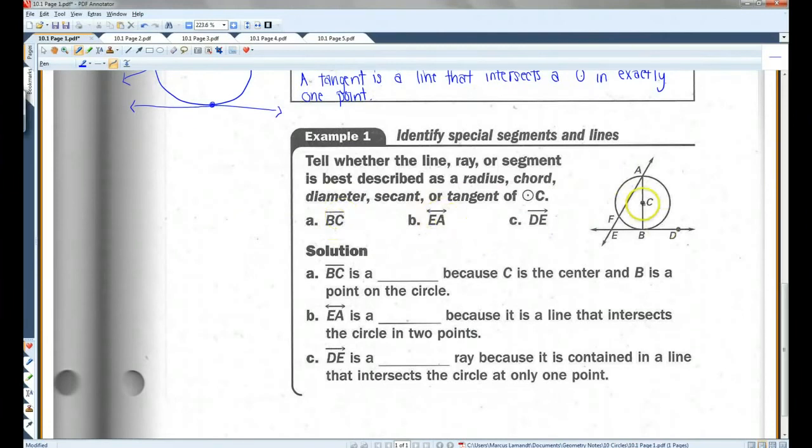Let's take a look at segment BC. Segment BC is right here. This is a radius. BC is a radius, because C is on the center, and B is a point on the circle.